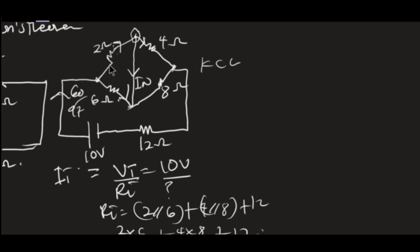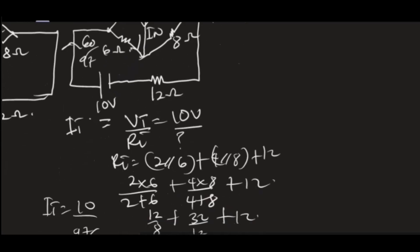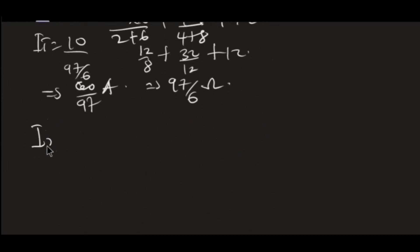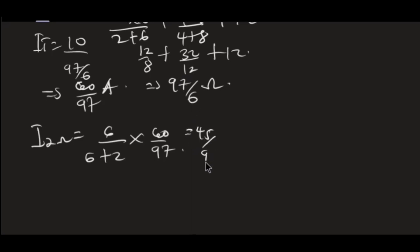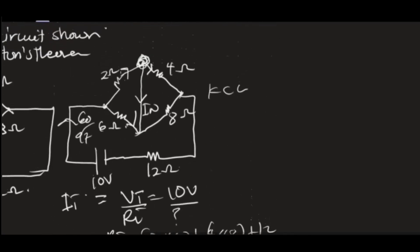Now we need to find the current in the 2 ohm and in the 6 ohm by current division. To find the current in the 2 ohm, I use: I_2Ω = (6 / (2+6)) × I_T. That is (6/8) × (60/97), giving us 45/97 amperes.